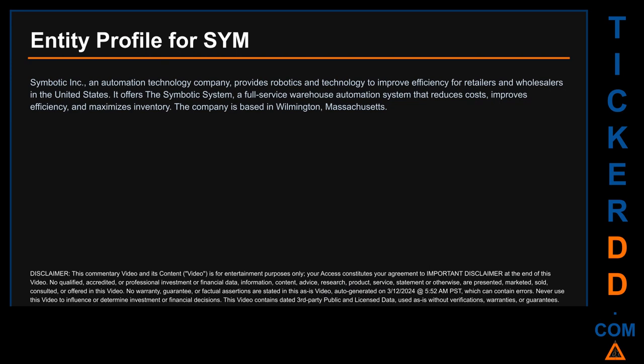Here is what I found: Symbotic Inc is an automation technology company that provides robotics and technology to improve efficiency for retailers and wholesalers in the United States. It offers the Symbotic System, a full-service warehouse automation system that reduces costs, improves efficiency, and maximizes inventory. The company is based in Wilmington, Massachusetts.